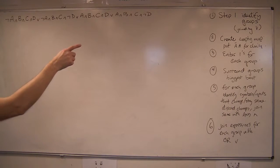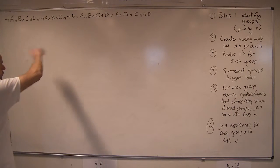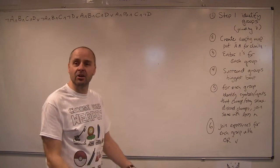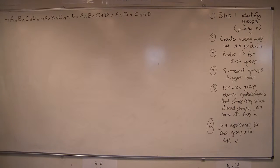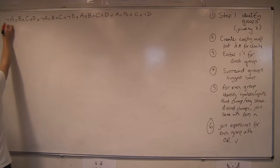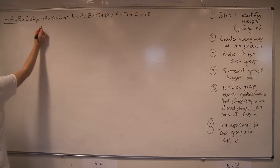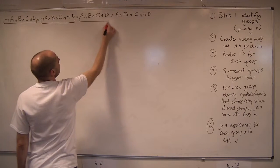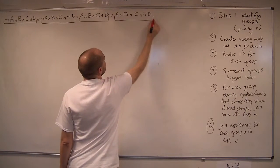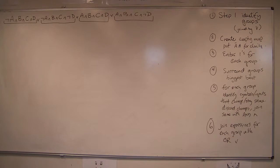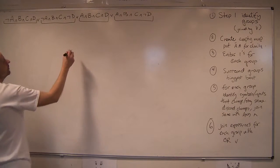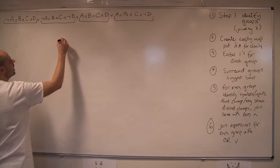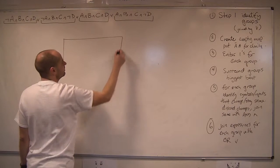Right, okay, so a really horribly complicated looking logical expression here. Just start by looking for the ORs to be added by the group. So there's a group, there's a group, there's a group, and there's a group. Okay, right, it's a four-input map that we need, so it's going to be a big old grid, four by four.